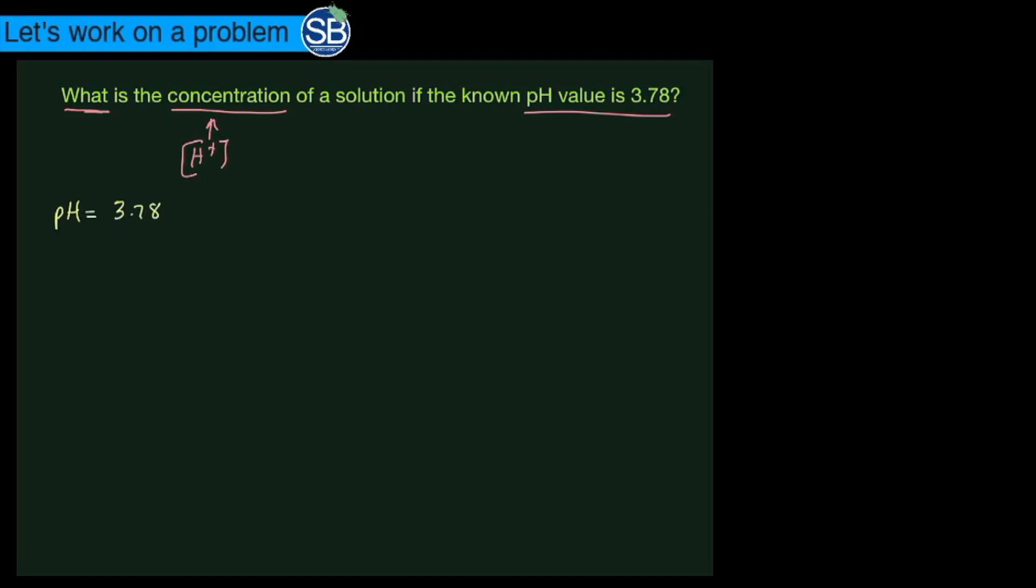We also know, associated with this pH value, that the pH equation is equal to the negative log of the hydrogen ion concentration. The reason we picked this equation is because we are after the concentration, and this pH equation does actually give us the information that we need in order to solve for that value of the unknown.